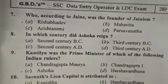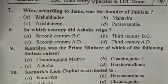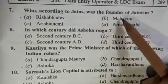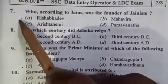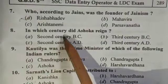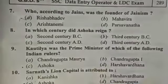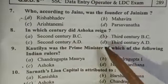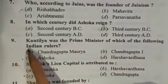Question 7: Who, according to Jains, was the founder of Jainism? The answer is Rishabhadeva. Question 8: In which century did the Maurya range arise? The answer is the third century BC.